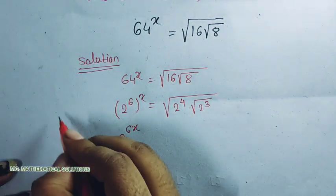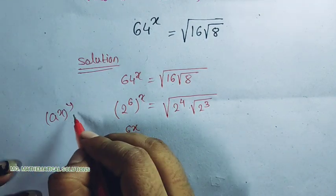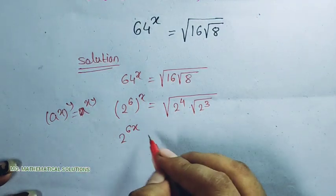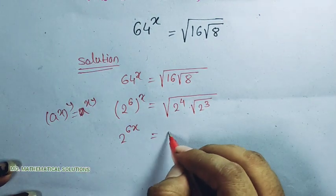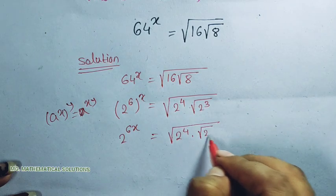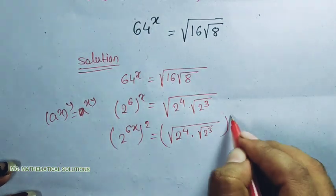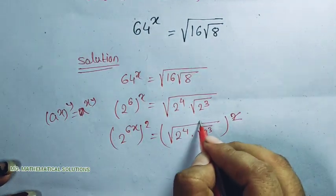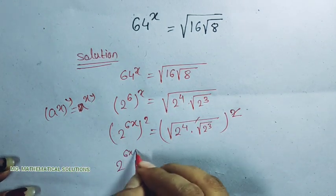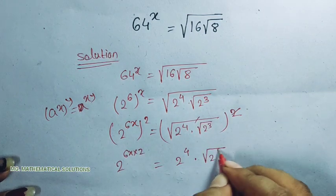2 to the power 6 whole to the power x means 2 to the power 6x, using the formula: a to the power x whole to the power y equals a to the power xy. This equals root of 2 to the power 4 times root of 2 cubed. Now squaring both sides — square and root cancel — so 2 to the power 12x equals 2 to the power 4 times root of 2 cubed.